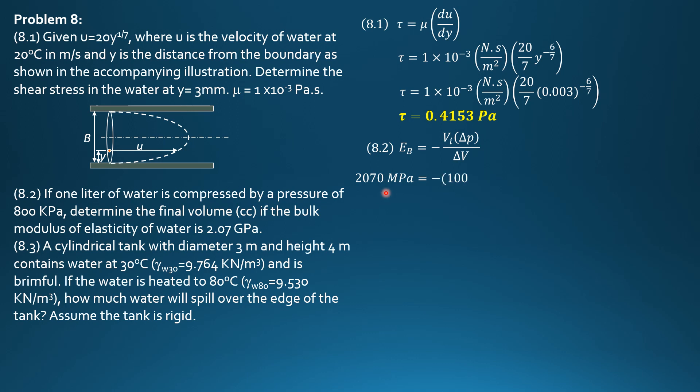2,070 megapascals, 2.07 gigapascals is 2,070 megapascals. Delta P is 800 kilopascals, divided by 1,000 to convert it also to megapascals to be consistent. Final volume, delta V rather, is final volume minus 1,000. Therefore, final volume is negative 1,000 times 0.8 divided by 2,070, then plus 1,000. It is equal to 999.6 cubic centimeters or cc.